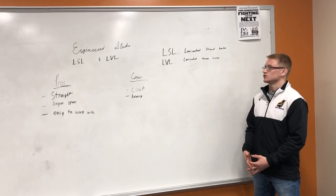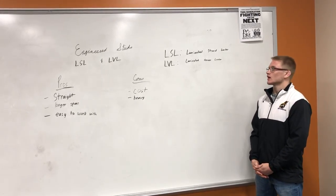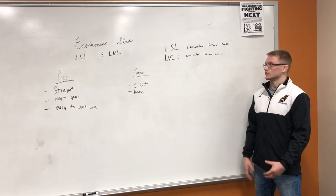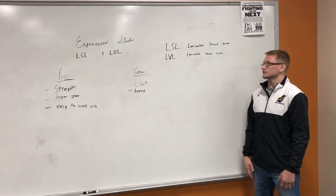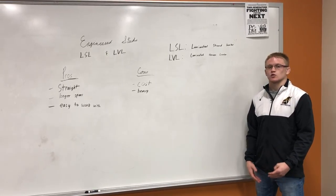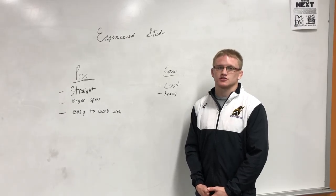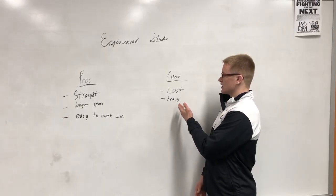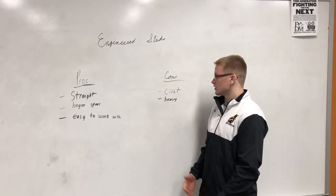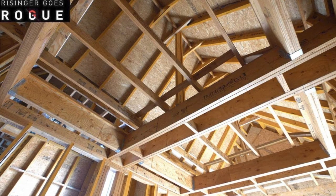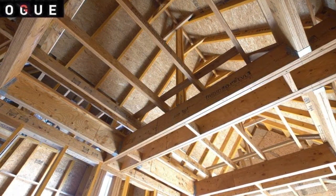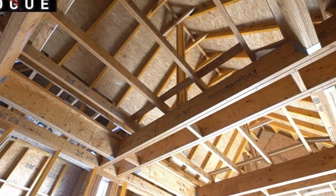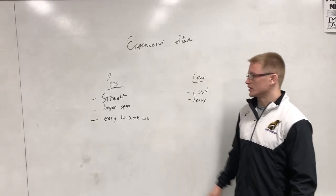Engineered studs can be broken into two categories: LSL and LVL. LSL is laminated strand lumber while LVL is laminated veneer lumber. Engineered studs can be thought of as OSB board — particles that are glued together. LVL is stronger than LSL but costs more money. Engineered lumber has not been fully adopted in the residential construction industry, partly because of the cost and weight, as engineered studs are much heavier than regular lumber. The pros include that the boards are much straighter, you can make longer spans, and it's much easier to work with.